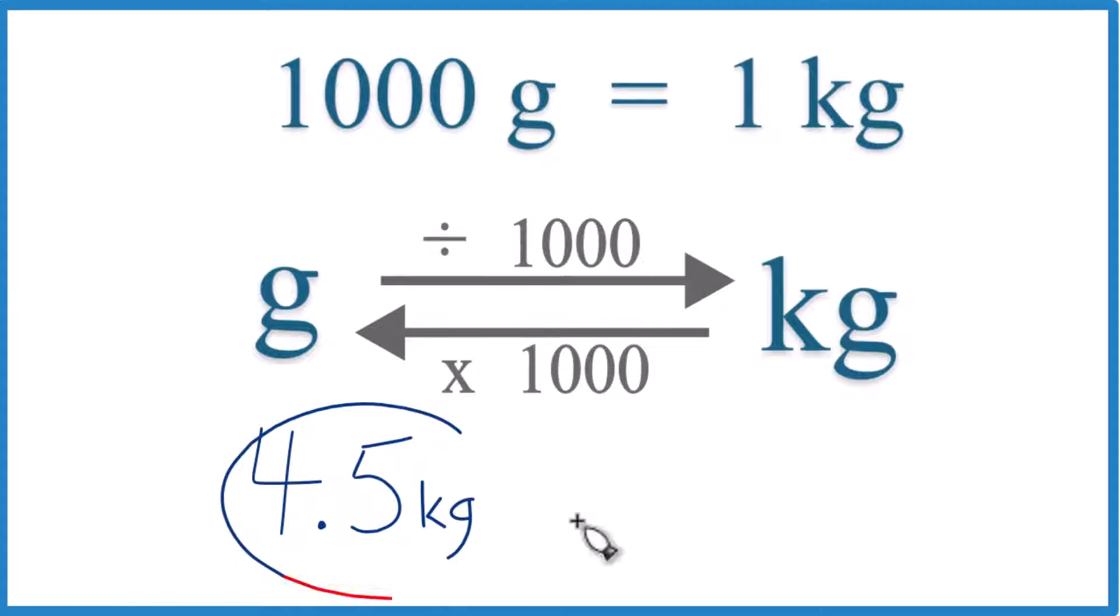If you're asked to convert 4.5 kilograms to grams, here's how you do it. You need to know that 1000 grams equals one kilogram.